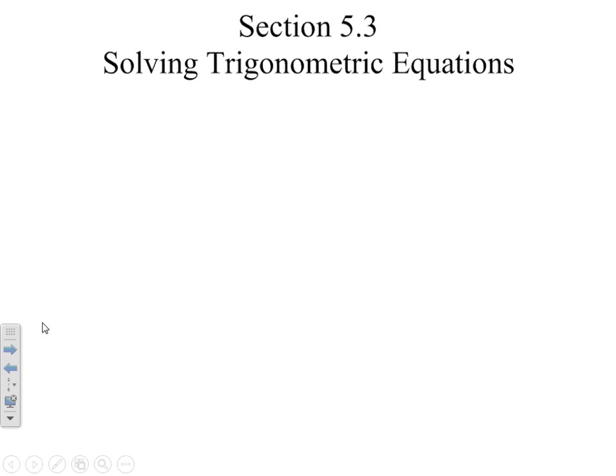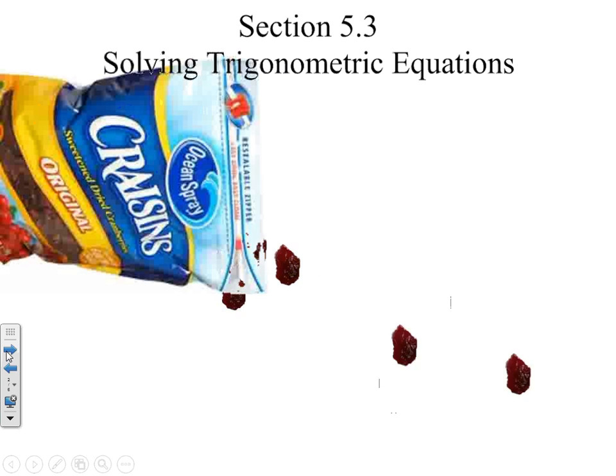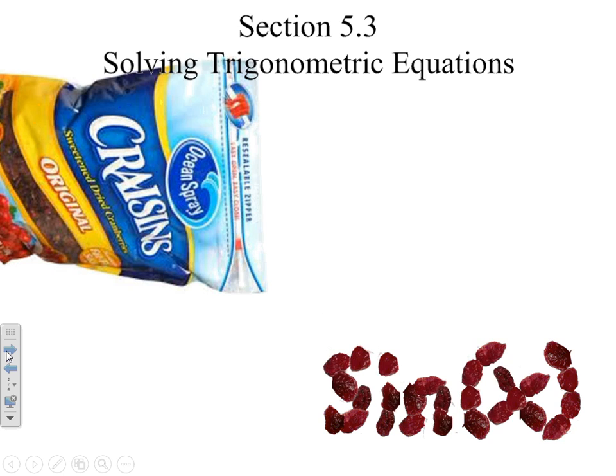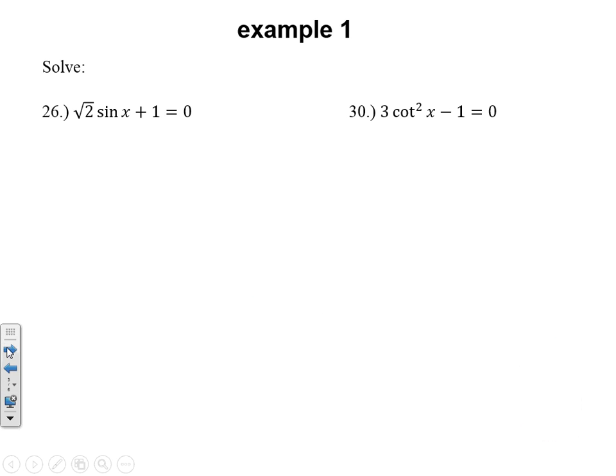Welcome to Honors Pre-Calculus, Section 5.3. Today we're solving trig equations. Our joke of the day: they have a product made by dehydrating cranberries, and instead of calling them raisins like dehydrated grapes, they call them craisins. So I've got a bag of craisins, and when you pour them out, they make a trig function, so they are triggy craisins instead of trig equations. I hope you get a good laugh out of that.